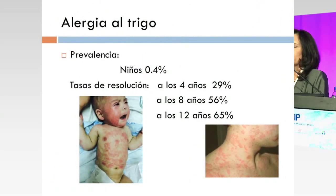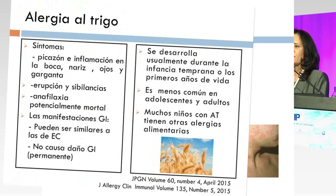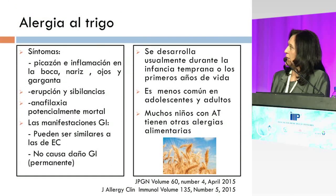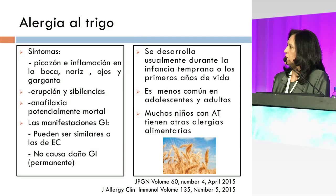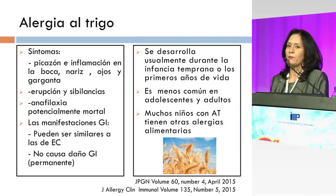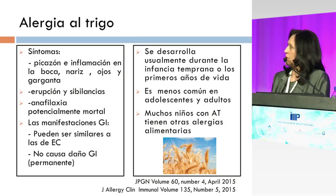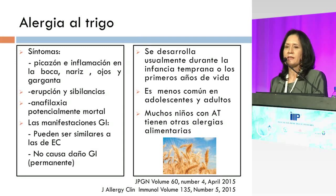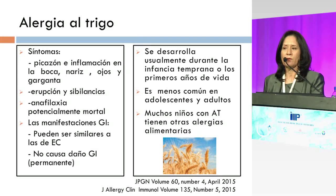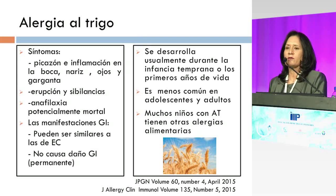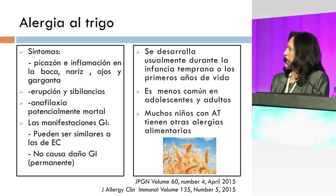La prevalencia se ha calculado alrededor de 0.4% y las tasas de resolución muestran que a los 12 años el 65% de los niños la ha superado. Los síntomas son muy variados: pueden ser picazón, inflamación de la boca, garganta, nariz, erupciones, sibilancias, e incluso algunos niños se van a manifestar con un cuadro de anafilaxia potencialmente mortal. Estos síntomas pueden ser similares a los de la enfermedad celíaca pero no causa un daño gastrointestinal permanente. Se desarrolla usualmente durante los primeros años de la infancia y muchos niños con alergia al trigo pueden tener otras alergias alimentarias como a la proteína de la leche de vaca.